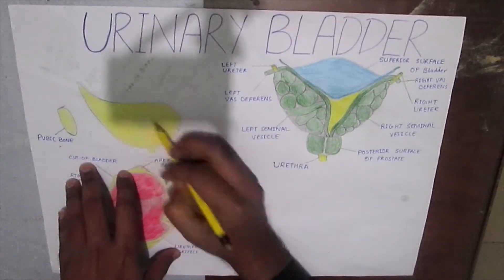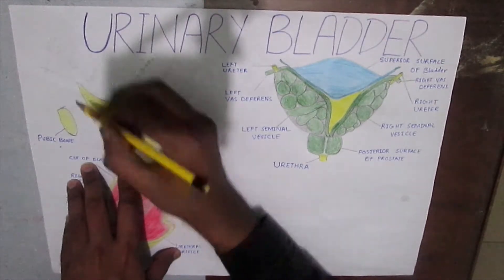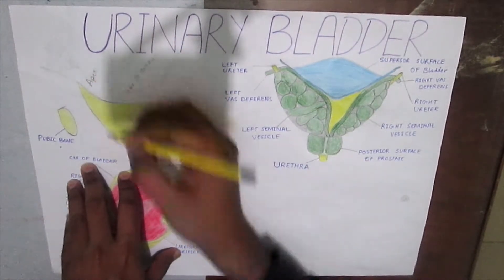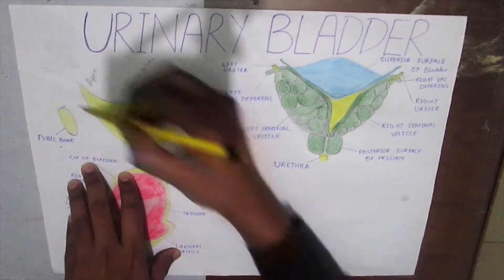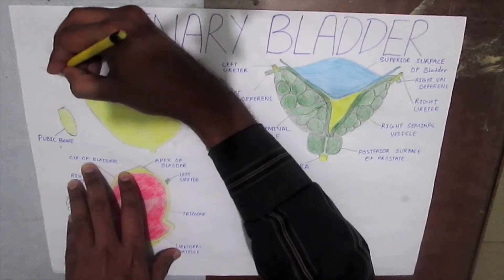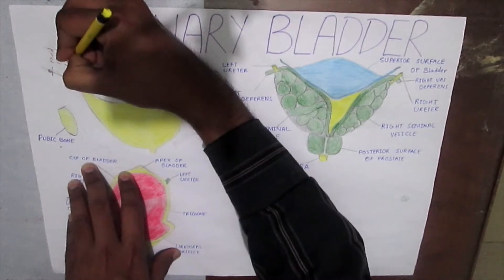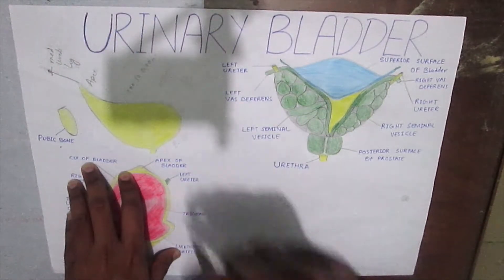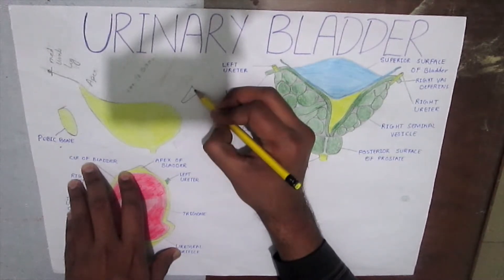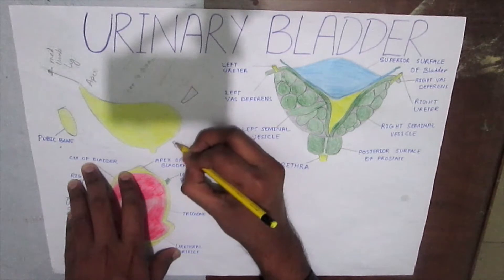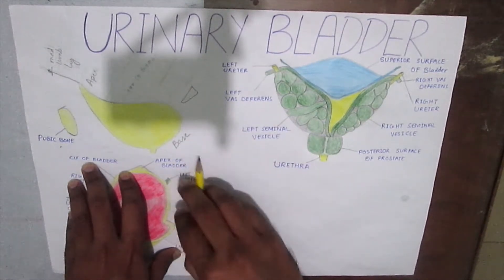Here in this diagram we can see the shape of the urinary bladder. This pointed area is known as the apex of the urinary bladder, which lies just behind the upper margin of the symphysis pubis. It is connected to the umbilicus by a ligament known as the median umbilical ligament. In a pyramid-shaped structure the apex always lies opposite to the base, so this will be the base of the urinary bladder, which is also known as the posterior surface of the urinary bladder.